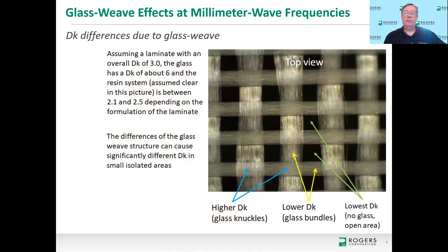Zooming in closer to one of these open weave glasses and talking about decay differences: if the laminate formulation is intended to have an overall Dk of 3.0 and is glass reinforced, the glass itself is about Dk 6, which means the resin system must be much lower — usually around 2.1 to 2.5, depending on the glass-to-resin ratio. The main point is that the glass has a much higher Dk than the resin system.